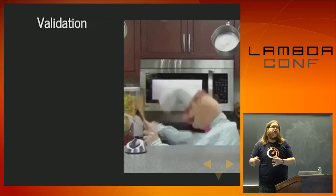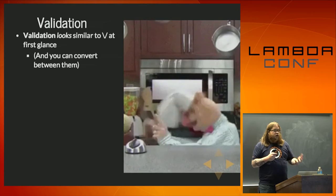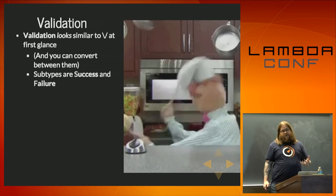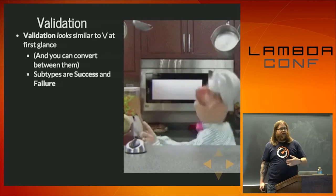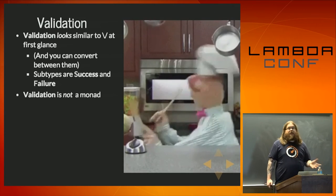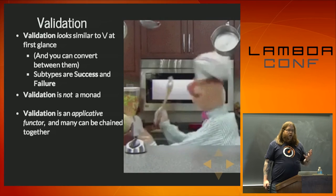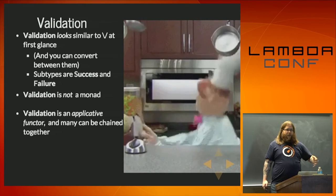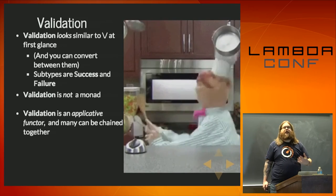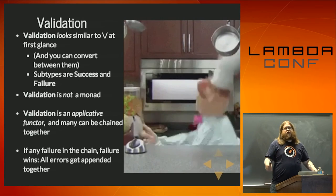Validation actually looks very similar to disjunction at first glance, and you can convert between them just like you can convert Options. The subtypes of Validation are Success and Failure. You can assume there's a bias towards success, but not quite in the same way as with Options or disjunctions. Validation is not a monad — you can't put it in a for expression unless you convert it to a disjunction. But what it is is an applicative functor, and you can chain many Validation objects together. If there's any failure in the chain, failure wins — all the errors get appended together.